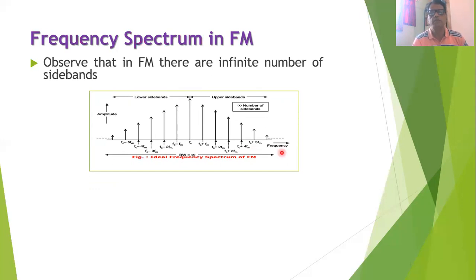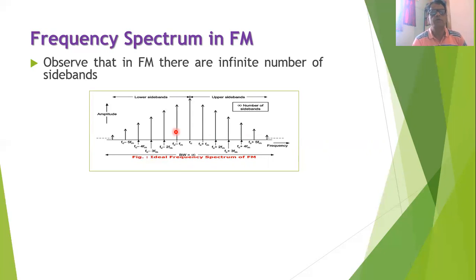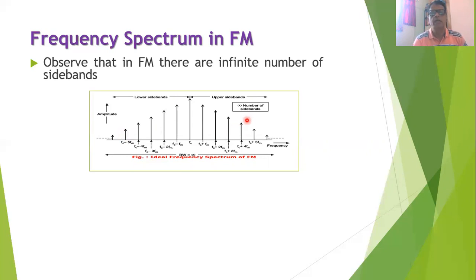When drawing the frequency spectrum in FM, the x-axis represents frequency and the y-axis represents amplitude. At the center is the carrier frequency FC. Upper sidebands are at FC + FM, FC + 2FM, FC + 3FM, and so on infinitely. Lower sidebands are at FC − FM, FC − 2FM, FC − 3FM, FC − 4FM, and so on infinitely.